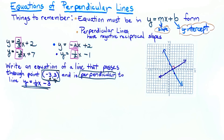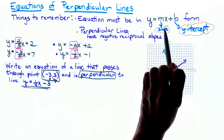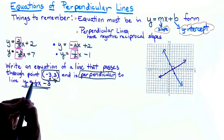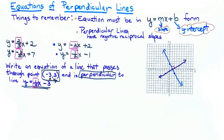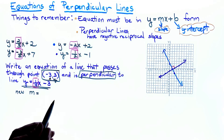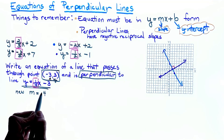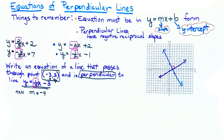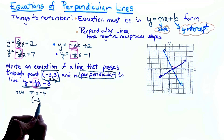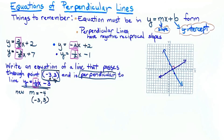The slope of the given line is one-fourth. For the new perpendicular line, the new slope m is the negative reciprocal: the reciprocal of one-fourth is 4, and since it needs to be negative, my new slope is negative 4. I list my point (negative 3, 3) to have everything in front of me.